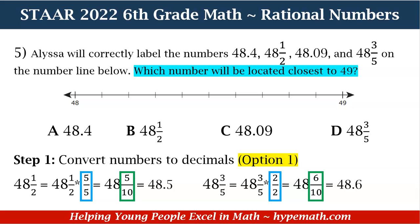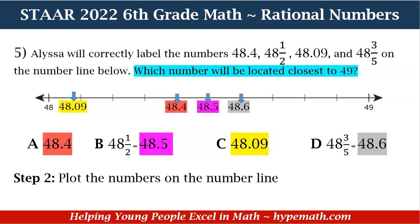Next, we are going to tackle 48 and 3 fifths. Looking at our denominator, can we make an equivalent fraction with 5 to make 10? Yes. So we multiply 2 over 2: 3 times 2 is equal to 6, and 5 times 2 is equal to 10. Our equivalent fraction is 6 tenths, and our answer is 48 and 6 tenths — which is 48.6. Now that we've completed step one, let's go to step two: plotting the numbers on the number line. We have A: 48.4, B: 48.5, C: 48 and 9 tenths, D: 48.6.